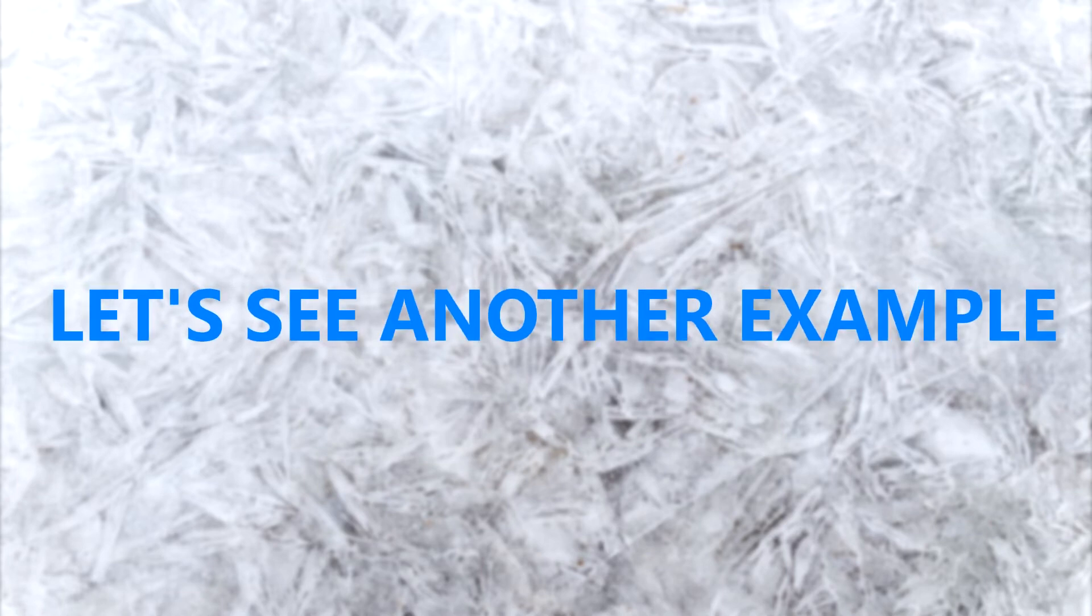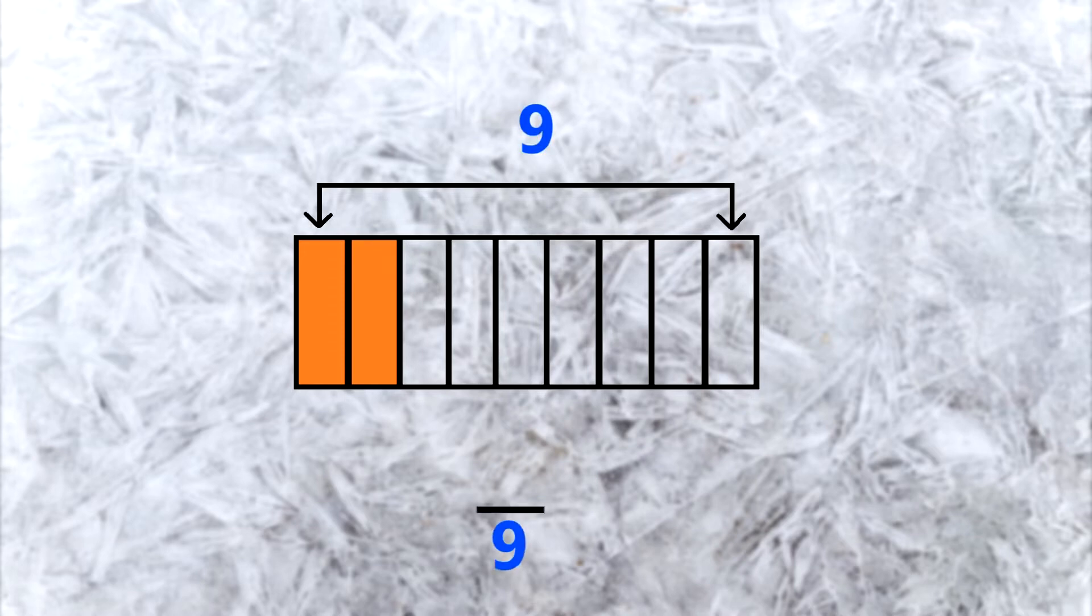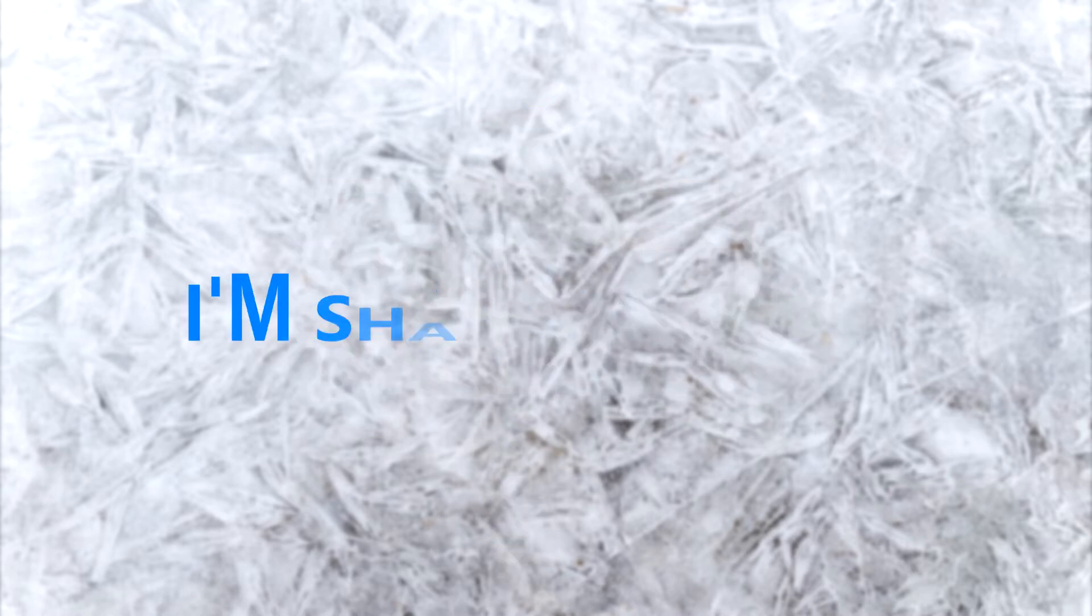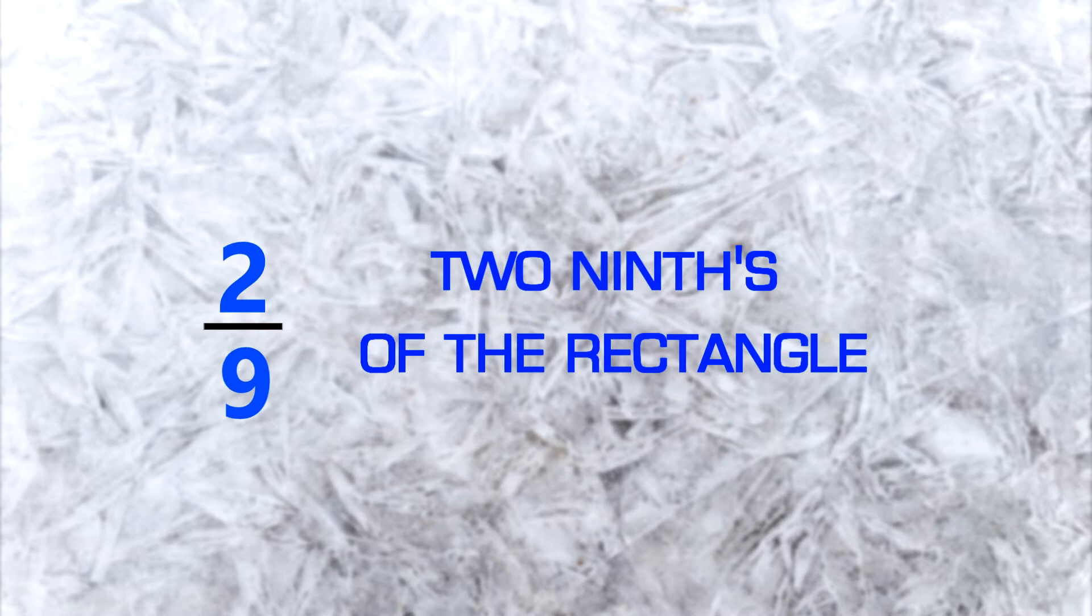Let's see another example. Let's say a rectangle is divided into 9 equal parts and I give you 2 of those parts. Since the total number of parts in the rectangle will be 9, the number at the bottom would be 9. And since I share 2 parts, the number on the top would be 2. So the fraction I am sharing will be 2 over 9 or 2 ninths of the rectangle.